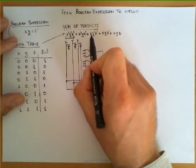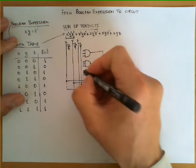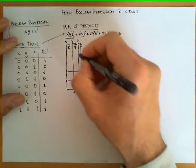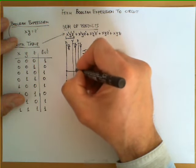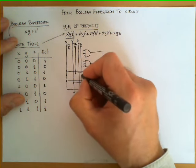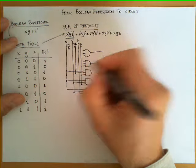This product over here contains x, y prime, z prime so we will connect x like this, y prime we need to bring down the line of this inverter and z prime we already have it here so we connected it like this.